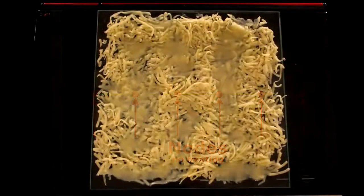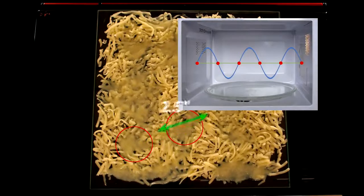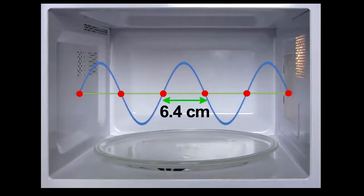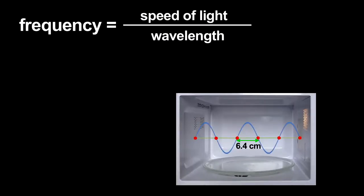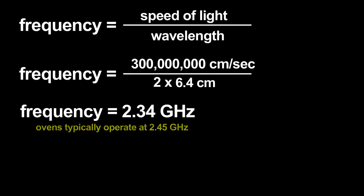If I measure the distance between melted cheese spots, I find about two and a half inches. That would be half the wavelength, the distance between nodes, and is pretty close to the actual wavelength of microwave radiation used. Using that wavelength, I can estimate the microwave radiation's frequency. The frequency is related to the wavelength by the speed of light. I get an answer that only has a four or five percent error. Not bad for this primitive measurement.